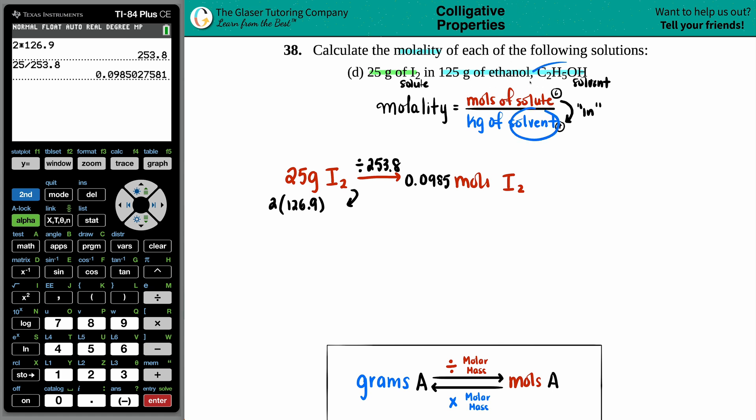For the solvent, which is the ethanol, this needs to be in kilograms. But they gave it to me in grams. So I have to take the 125 grams of the ethanol, C2H5OH, and just convert it into kilograms of C2H5OH.